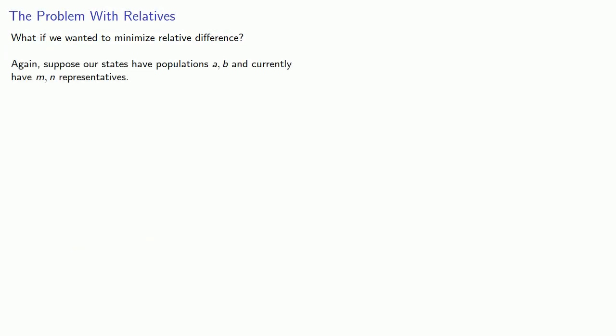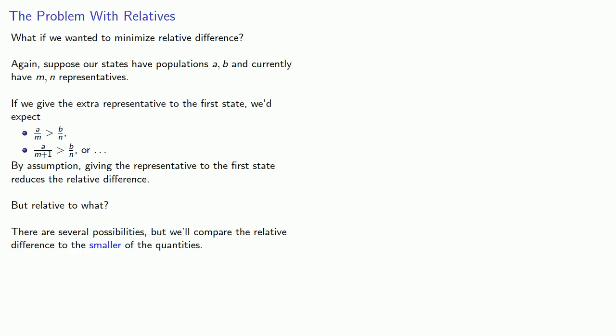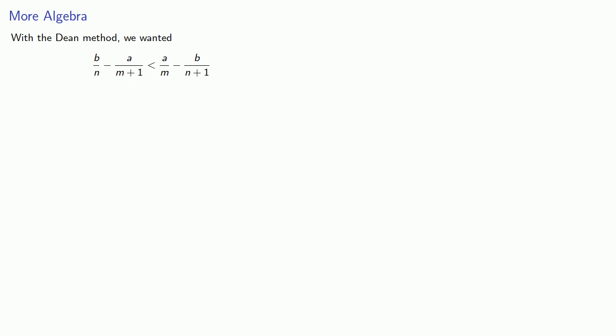What if we wanted to minimize relative difference? Again, suppose our state populations are A and B, and they currently have M and N representatives. If we give the extra representative to the first state, we'd expect A/M must be greater than B/N — the persons per representative in the first state is larger than in the second state. If that's still true, we were correct in our decision. By assumption, giving the representative to the first state should reduce the relative difference. But relative to what? There are several possibilities, but we'll compare the relative difference to the smaller of the quantities. We start with the Dean method inequality and note that the smaller quantity is going to be the amount that we're subtracting.